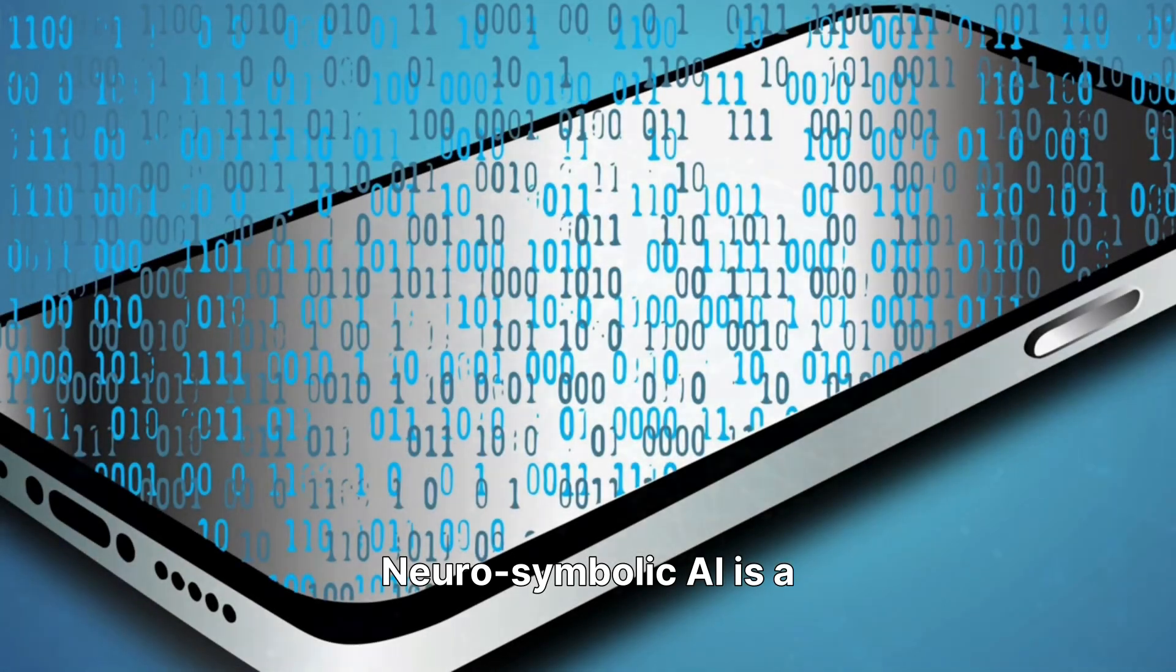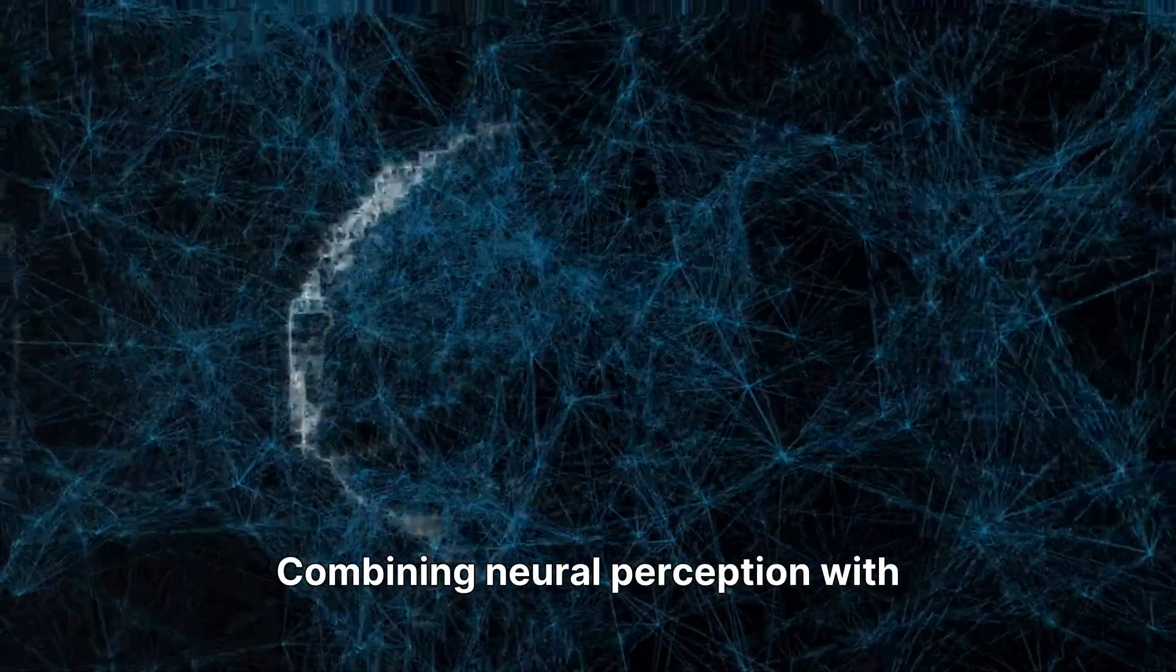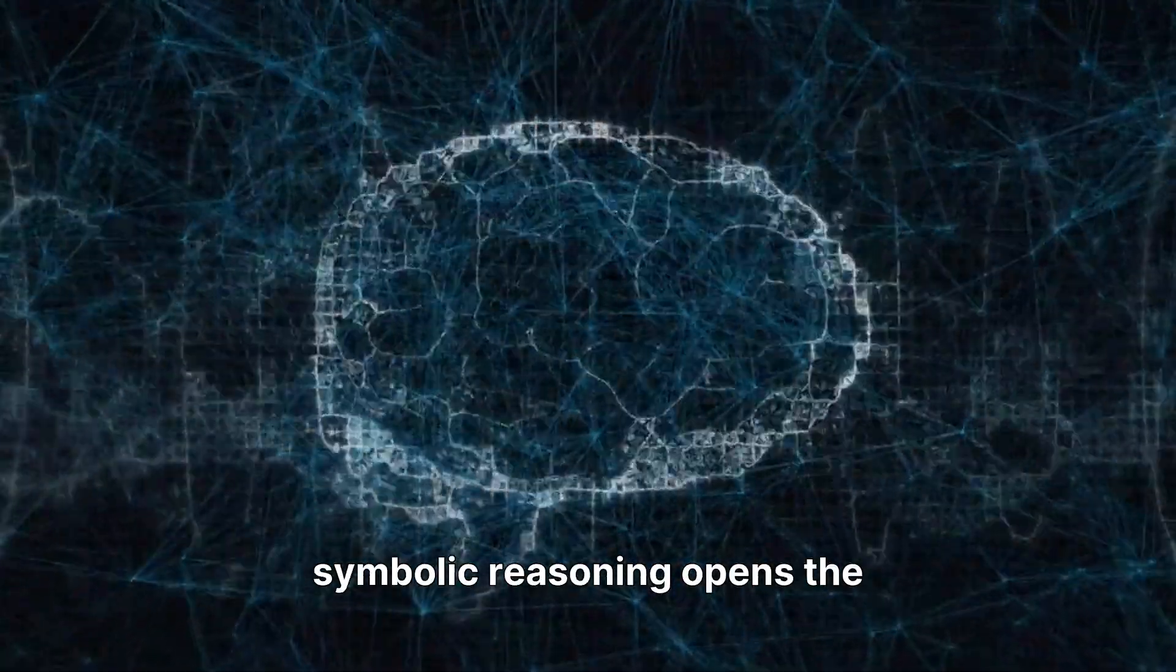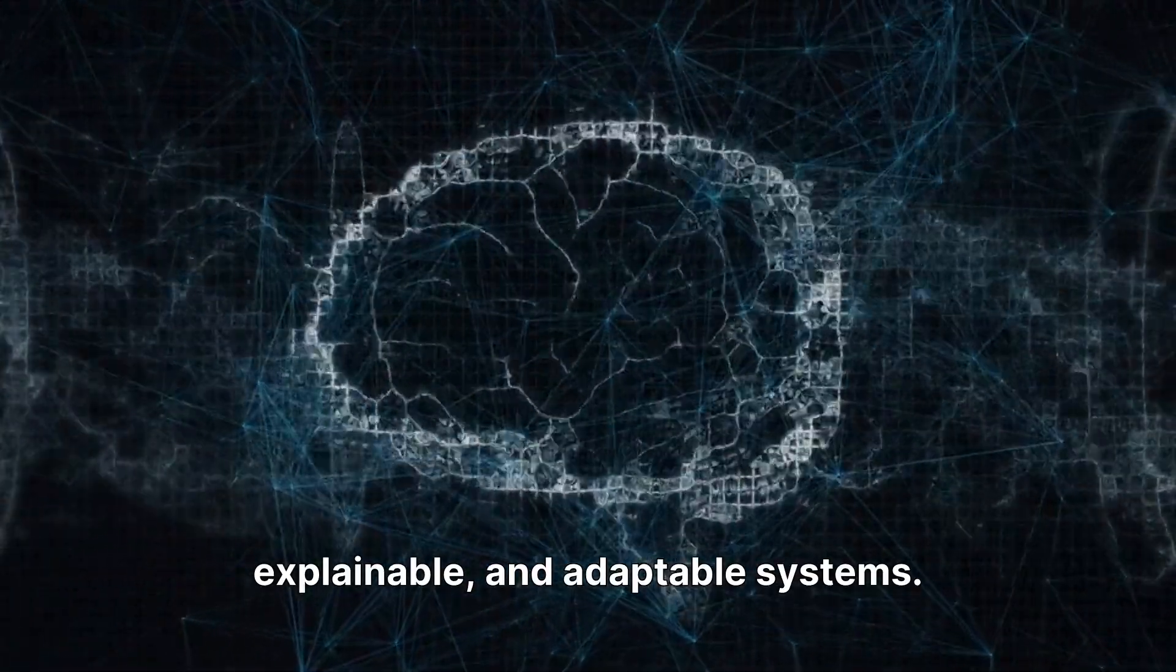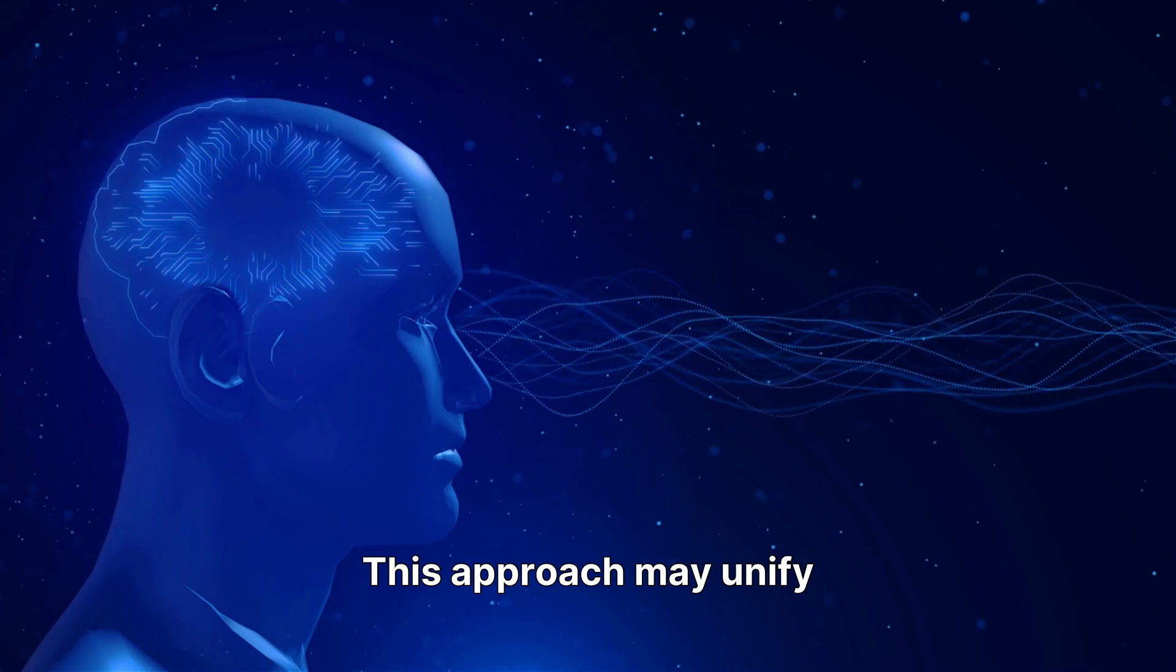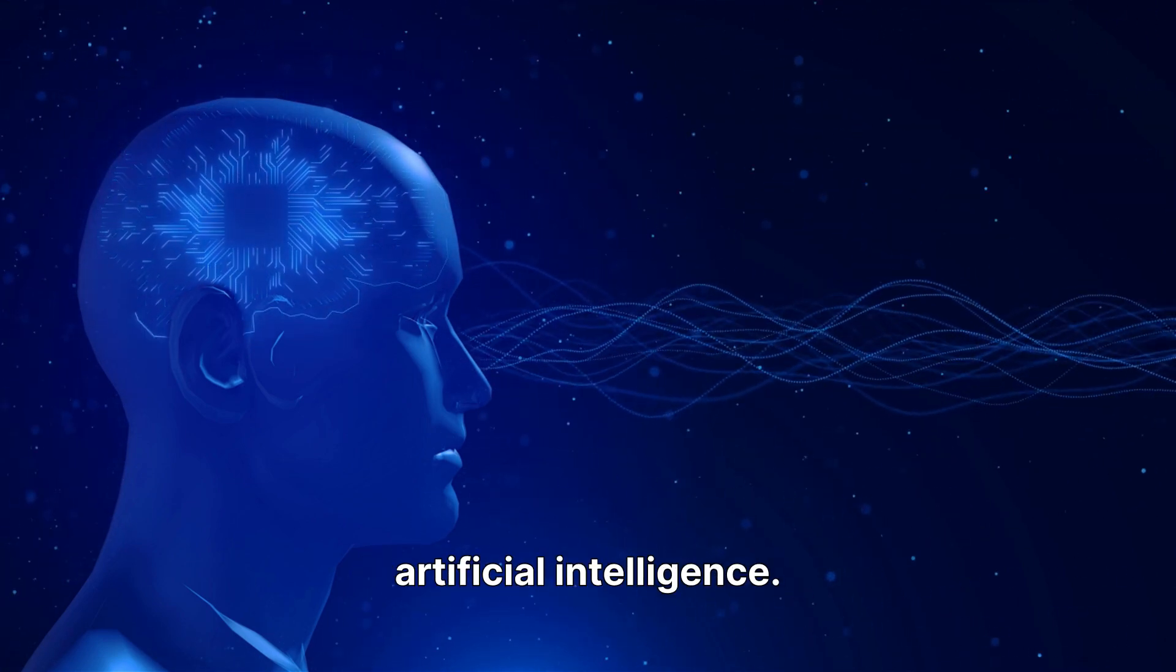Neurosymbolic AI is a synthesis that redefines how machines think and learn. Combining neural perception with symbolic reasoning opens the door to more intelligent, explainable, and adaptable systems. This approach may unify AI traditions, bringing us closer to truly human-like artificial intelligence.